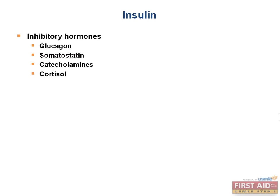A way to remember that catecholamines and cortisol inhibit insulin release: these hormones are released in times of stress — when you need to run, you need sugar to fuel your muscles. Therefore, they work to keep blood sugar levels high by stimulating glucagon release, which promotes the release of sugar into the blood rather than uptake into cells for storage. There is also an adrenergic receptor type — the alpha-2 receptor — that when stimulated, inhibits insulin secretion.